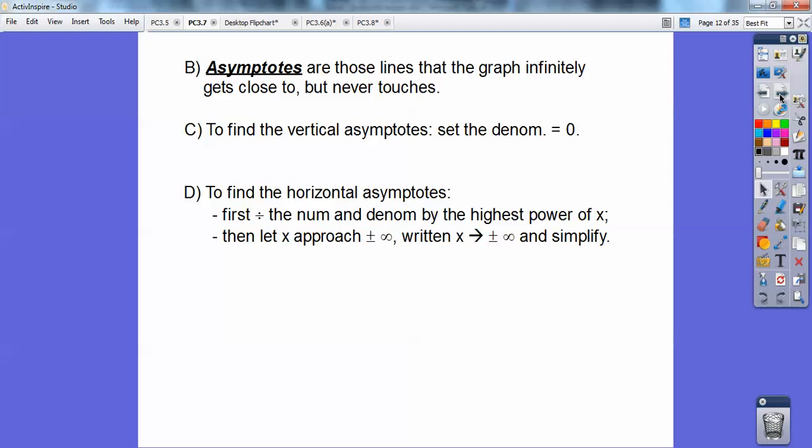To find the horizontal asymptote, you first divide the numerator and denominator by everything by the highest power of x, and then you let x approach infinity, and then simplify. So for example, find the asymptote to section A. So I'm going to divide everything by x. First of all, the horizontal is x minus 2 equals 0, so x equals 2.